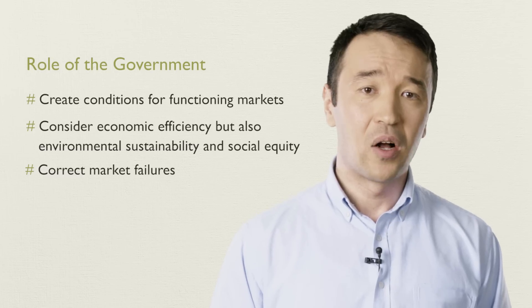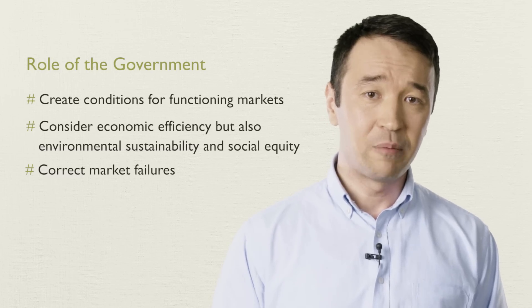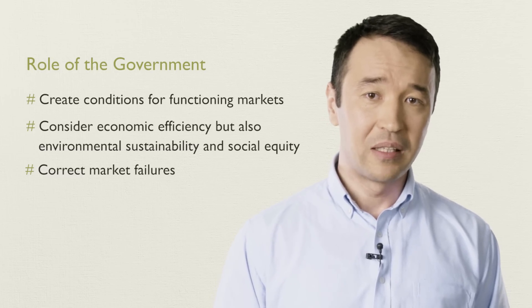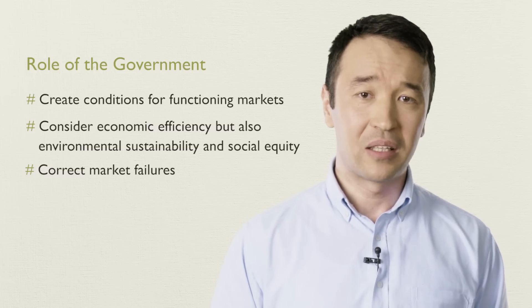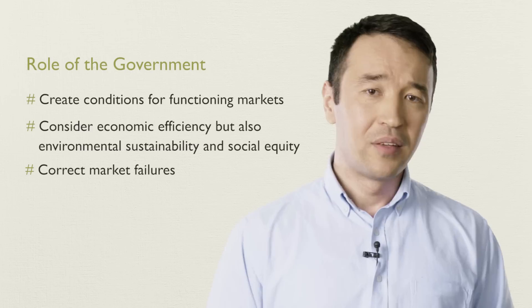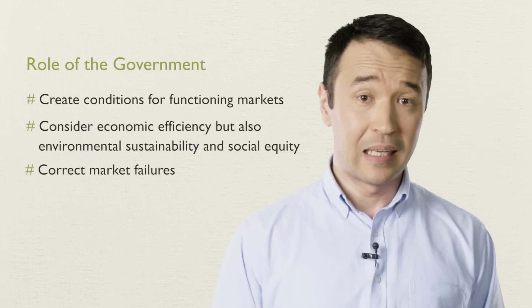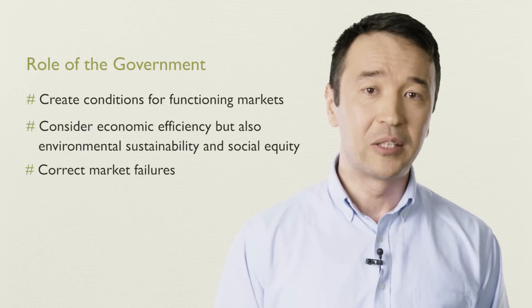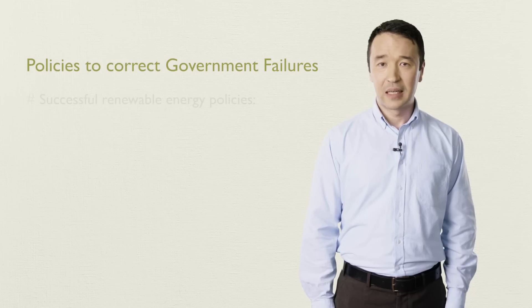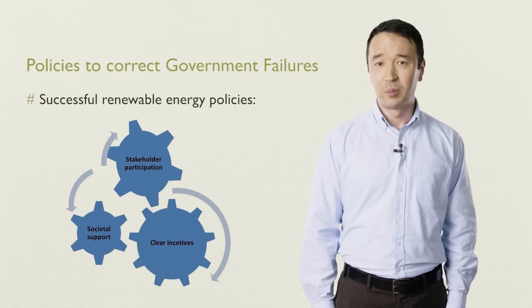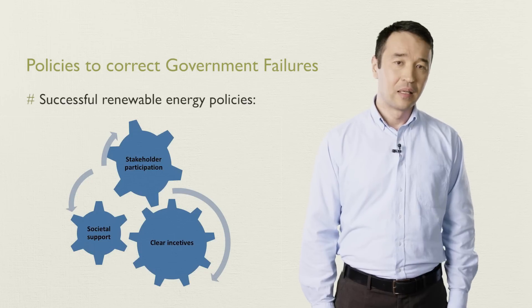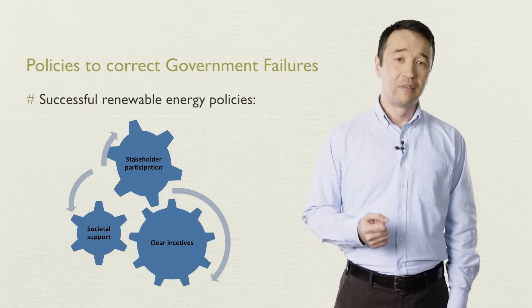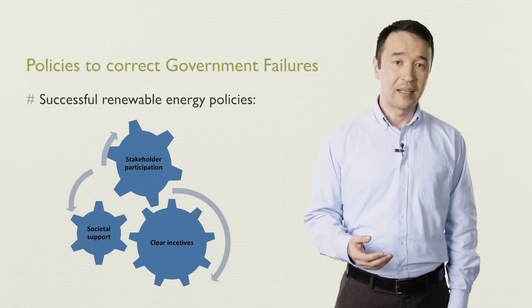But there are also risks associated with government failures, when government interventions aimed at correcting market failures lead to even bigger inefficiencies and misallocation of resources. This may happen, for example, due to excessive influence of specific lobbying interests on government decisions. In such contexts, successful policies for promoting renewable energies set clear incentives and use market mechanisms, base government action on societal support, and involve local governments and civil society.